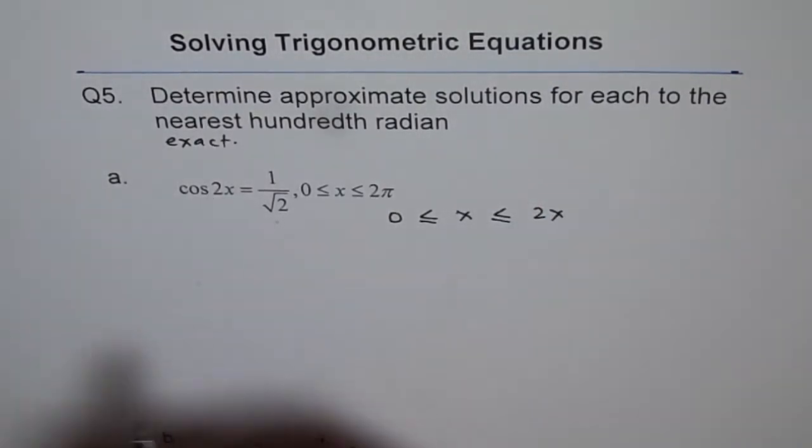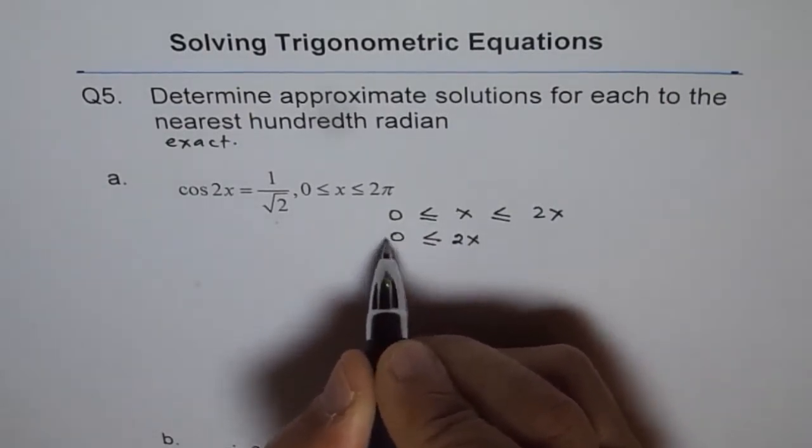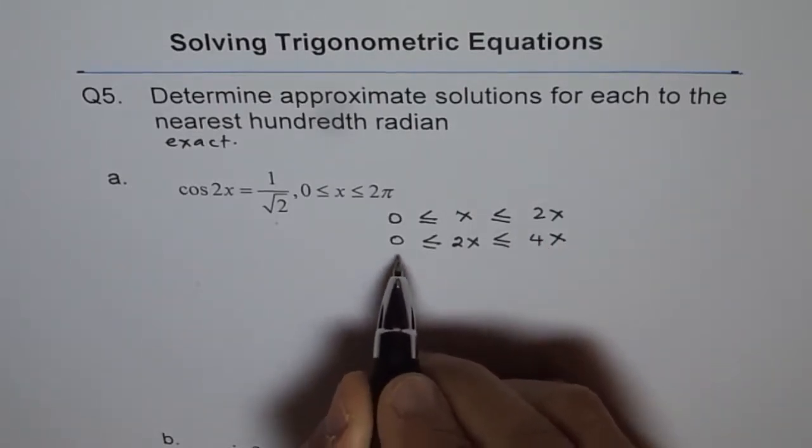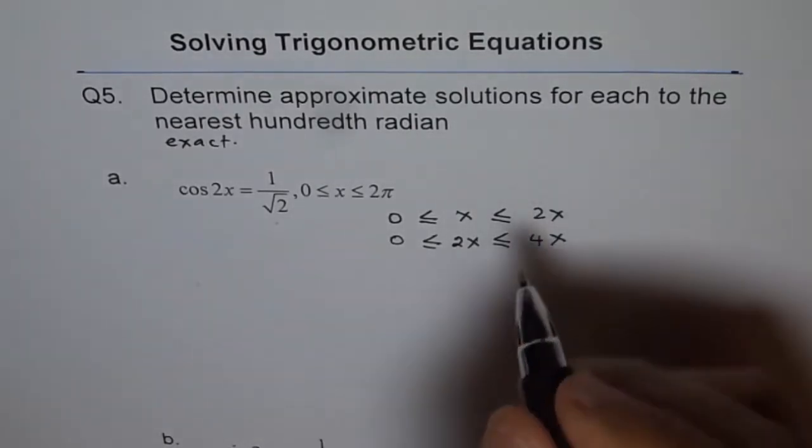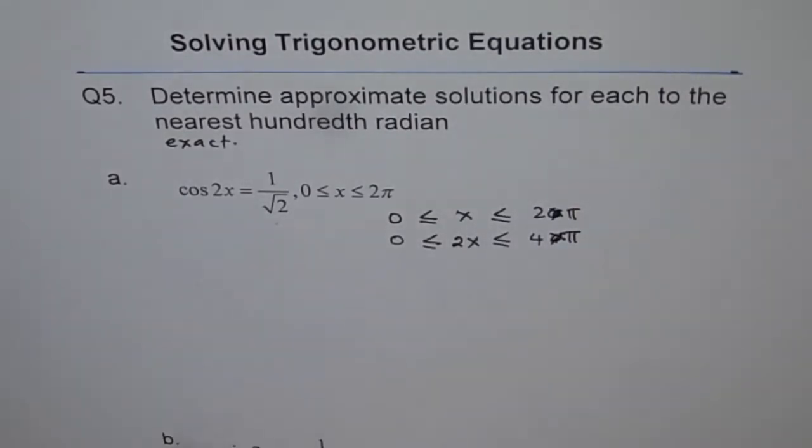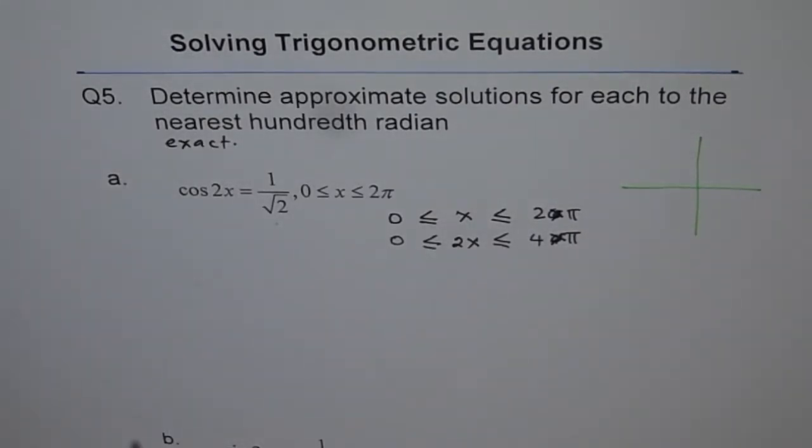Now, since it is 2x, so we will multiply this by 2 and there we go. We get a domain which is not just between 0 to 2π, but is between 0 to 4π. Oh, I was supposed to write π here. Yes, 0 to 4π. Correct?